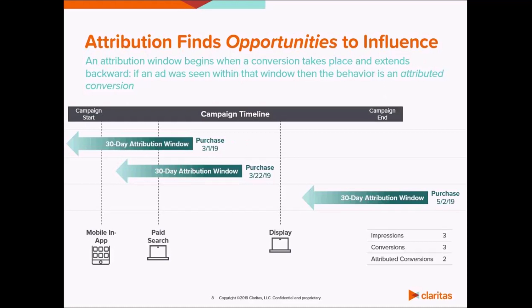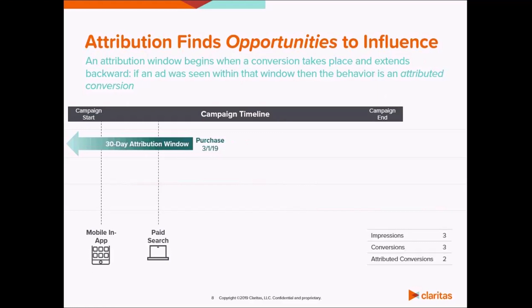This slide illustrates how these windows are anchored at the point of conversion. On March 1st, a purchase was made. Looking back 30 days, we see this household was exposed to two advertisements — one within a mobile app and another through a search engine. These are called working impressions because they have the ability to influence behavior.